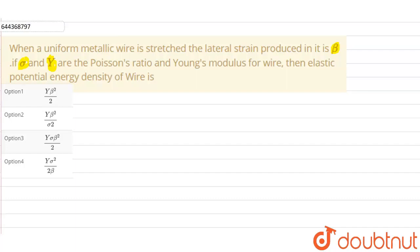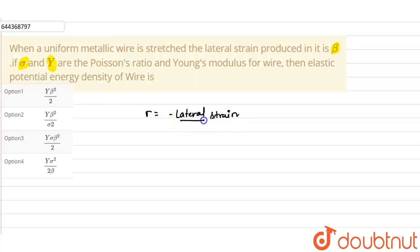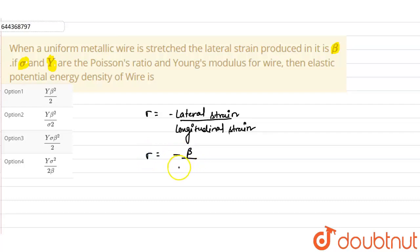We know that Poisson's ratio sigma is given as minus of lateral strain upon longitudinal strain. The lateral strain produced in the wire is beta, so sigma equals minus beta upon longitudinal strain.